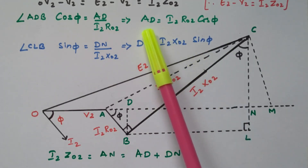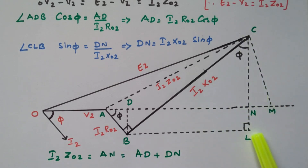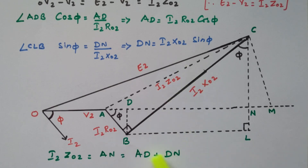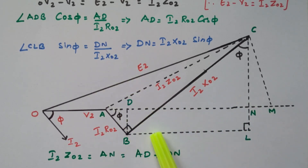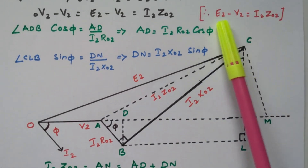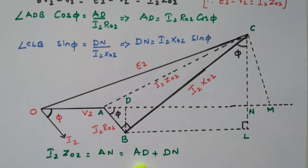From triangle CLB, sin φ equals opposite side over hypotenuse. The opposite side is BL, which is also equal to Dn. The hypotenuse is I2·X02. So Dn equals I2·X02·sin φ. Now we have both Ad and Dn. I2·Z02 (our regulation) equals An, which equals Ad plus Dn. E2 minus V2 is I2·Z02, represented from the diagram as An, which is split into Ad plus Dn.